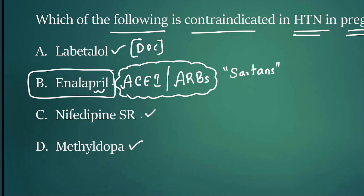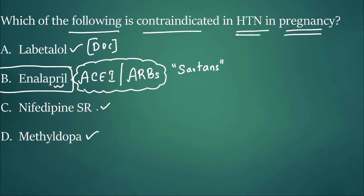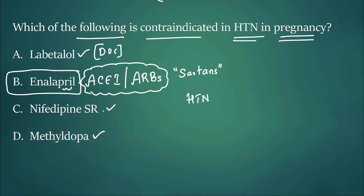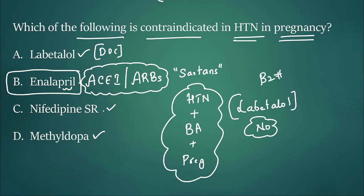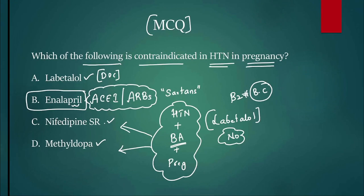Methyldopa is also safe in pregnant women. Now suppose the same question is altered: a patient has hypertension and bronchial asthma and she is pregnant. Can we use labetalol? If you're telling no, your answer is correct. Labetalol is not given because it's a non-selective beta blocker. If you use non-selective beta blockers, they block beta-2 and can cause bronchoconstriction and worsen asthma. In that situation, I can prefer either nifedipine or methyldopa.